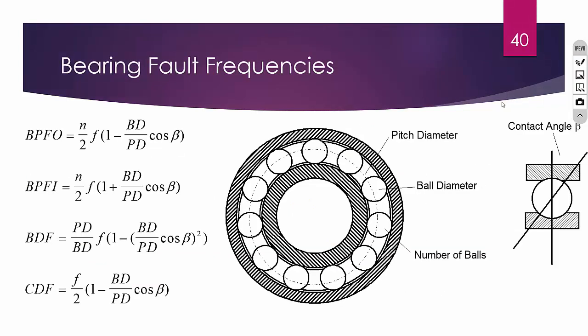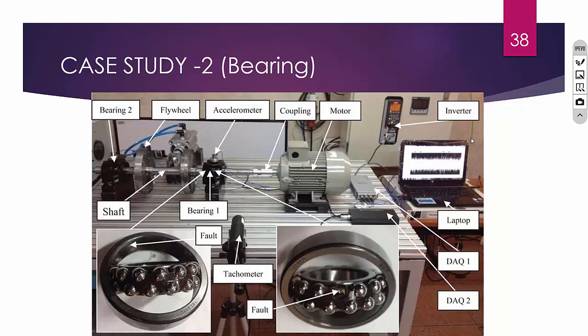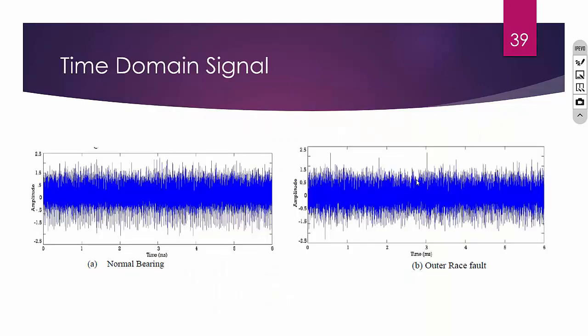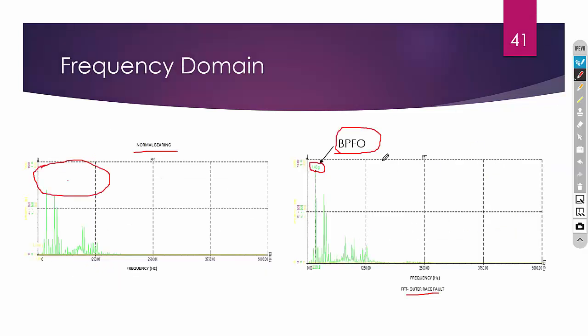This confirms the fault is at the outer race — and indeed in this case we do have an outer race fault, so the method has clearly identified it. Similarly, if you have a peak value at the BPFI frequency, it means there is a fault at the inner race. This is how we identify faults on bearings using both time domain and frequency domain analysis.